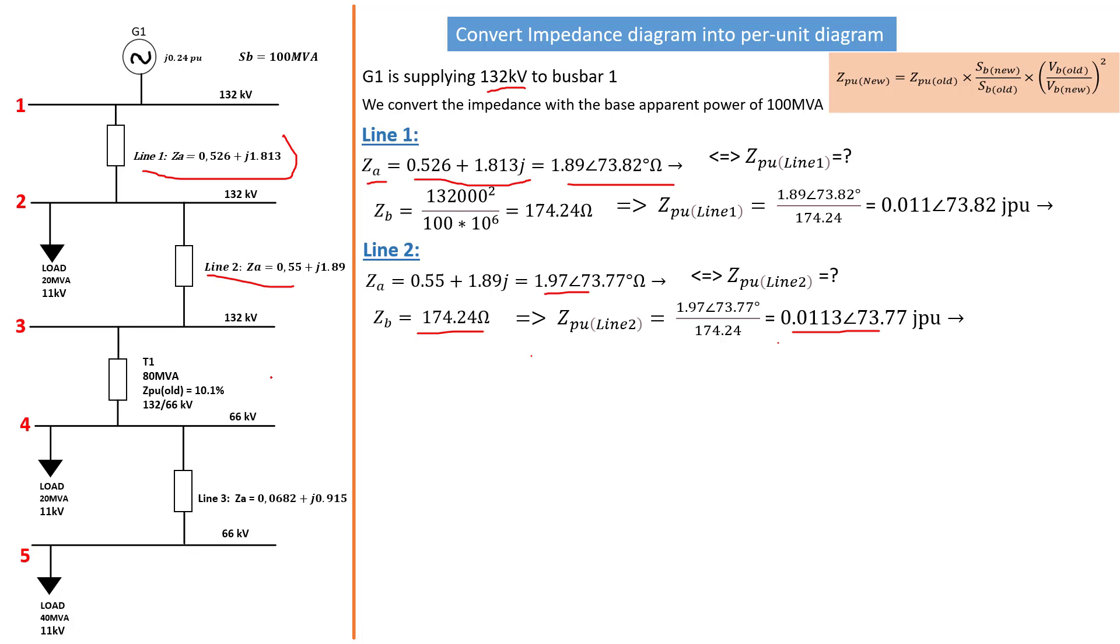Moving on to the transformer T1. The transformer T1 is a bit complicated but we've done it before. It's a step down transformer. The transformer has a rated apparent power of 80 MVA, which is going to be considered as our ZB old. The Z per unit old is 10.1, that is 0.101 percent.